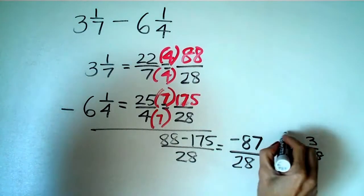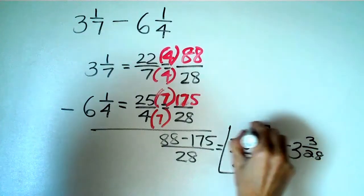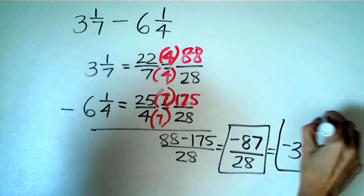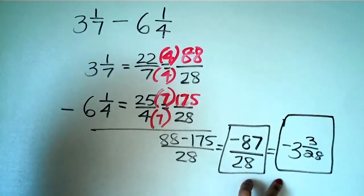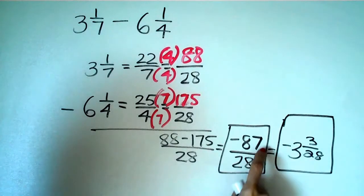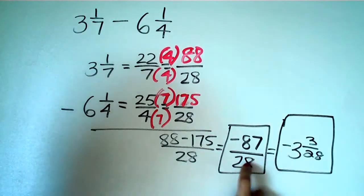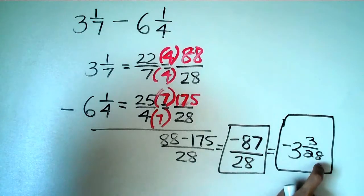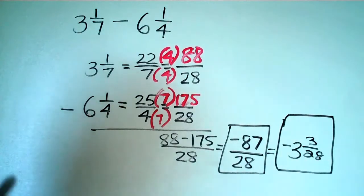And then if you want to, you know, you might see it in this form. You might see it in this form. Either one is generally okay. You should know how to do both of those though. So this is simply eighty-seven divided by twenty-eight. I know twenty-eight times three is eighty-four. So I had three left over, over twenty-eight. And that's it.